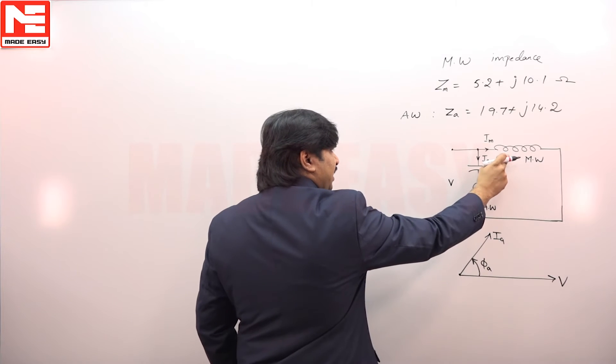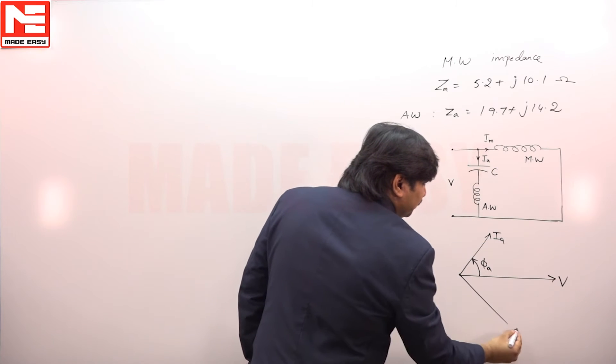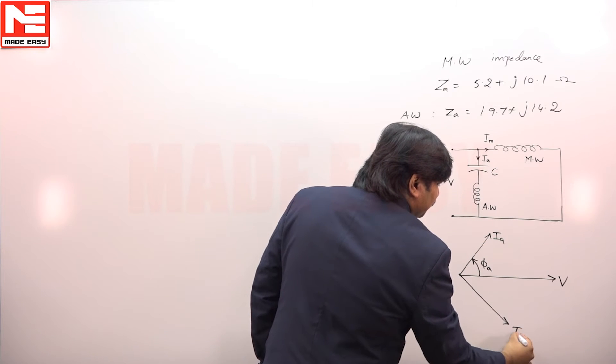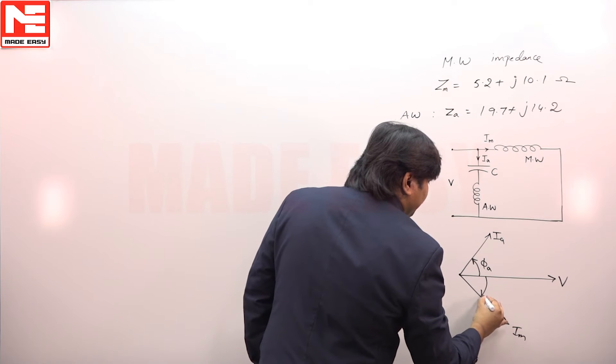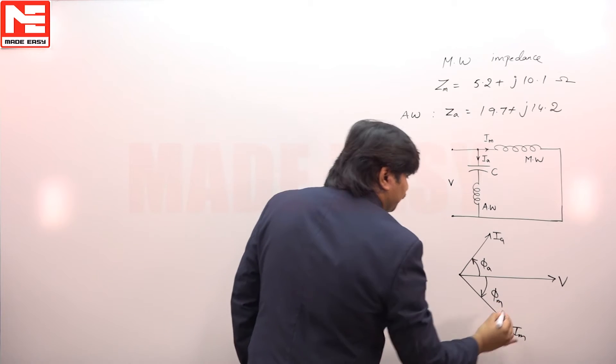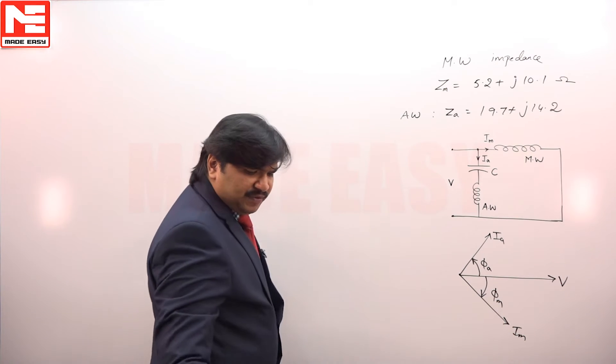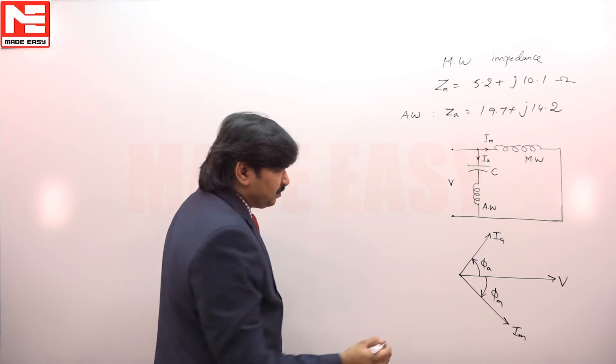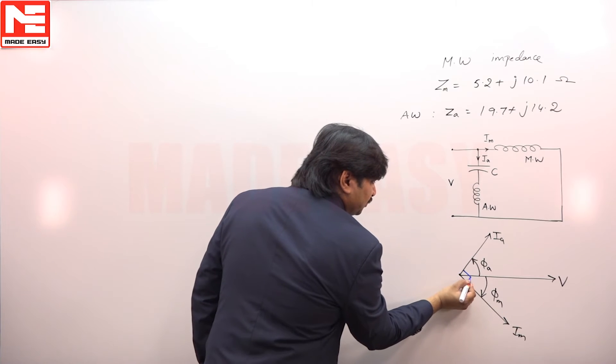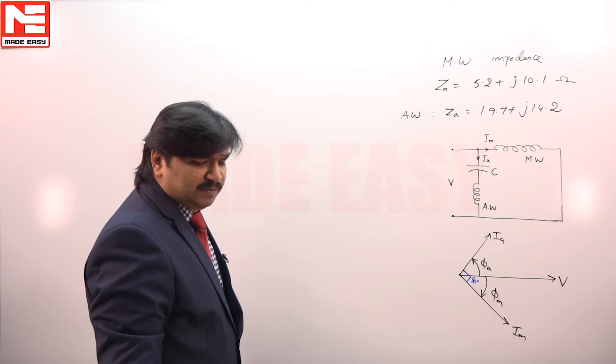Naturally, the current at the main winding will lag, I_m, with angle phi_m. If you can adjust the angle between these two currents to exactly 90 degrees, it is a perfect two-phase motor which gives maximum starting torque.